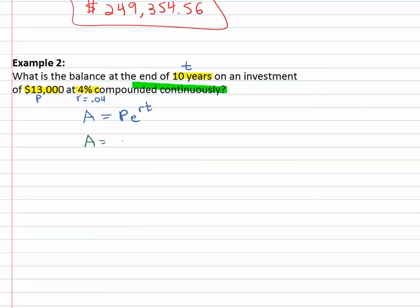Plug it into the formula, a is equal to p, the thirteen thousand dollars. E to the r t, r is .04 times t is ten.